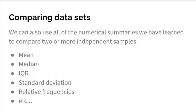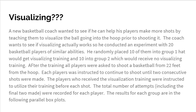Here's the first example: visualizing. A new basketball coach wants to see if he could help his players make more shots by teaching them to visualize the ball going into the hoop prior to shooting. He conducted an experiment with 20 basketball players of similar abilities. He randomly placed 10 into group one, who would get visualizing training, and 10 into group two, who would receive no visualizing training. After training, all players shot from 22 feet and continued shooting until two consecutive shots were made. The total number of attempts, including the final two made, was recorded for each player. Results are shown in the following parallel box plots.